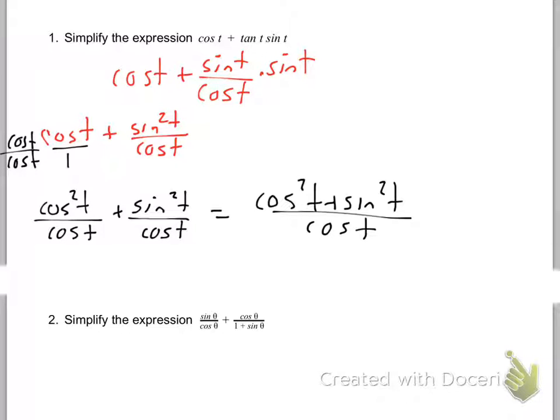I've got a common denominator. I can put those together. Cosine squared t plus sine squared t all over cosine t. Anybody recognize anything else? There should be a light bulb going off. This is one of those ones that said you need to memorize, you need to start. Pythagorean identity. Which one? First one. Sine squared plus cosine squared is one.